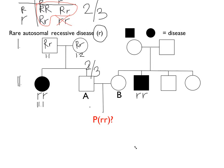For individual B, looking at their parents, the exact same scenario is true. B's parents don't have the disease, but they produced a child that has the disease, so they must be heterozygous. The calculation is exactly the same, meaning B also has a 2/3 probability of being heterozygous.